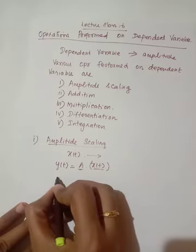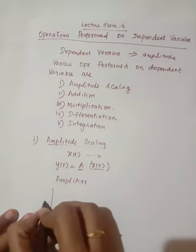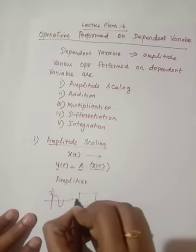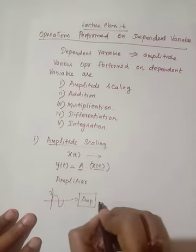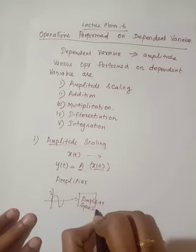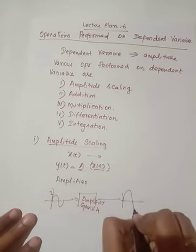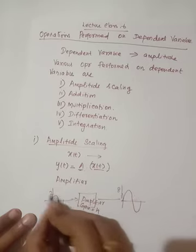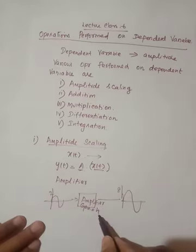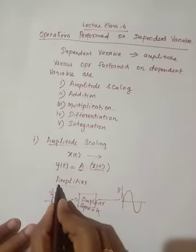For example, you have studied about an amplifier. If your input is 2 volts and you feed it into an amplifier, depending upon the gain you have designed — suppose a gain of 4 — the amplifier will produce an output whose amplitude is 8. So here, it scales the amplitude by a factor of 4. This is one real-time example of amplitude scaling.